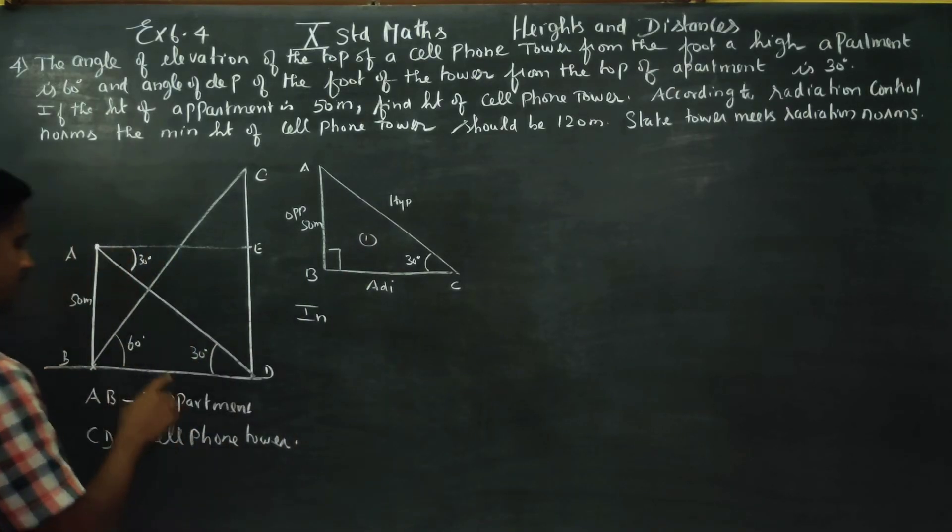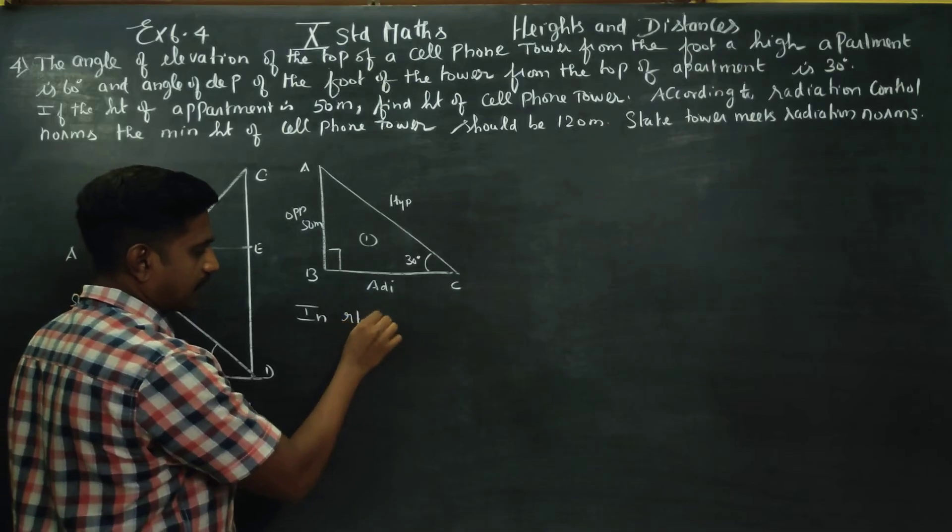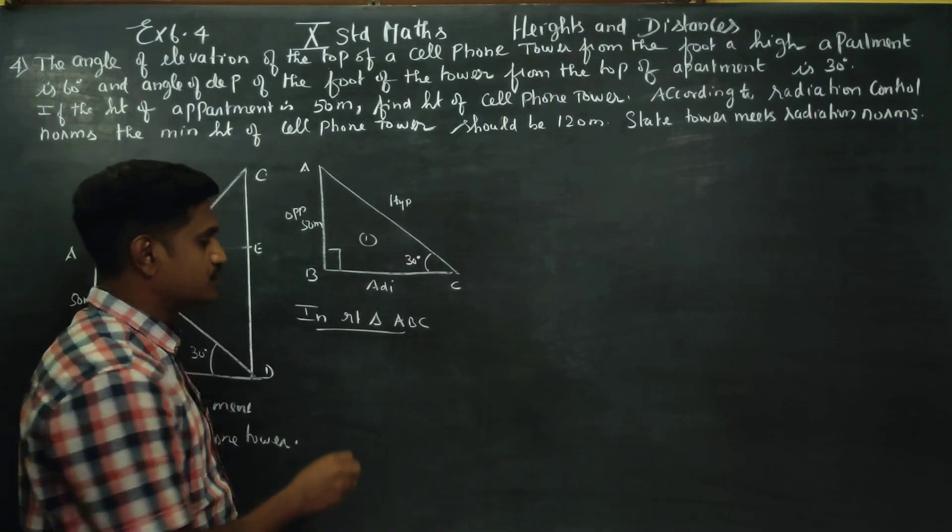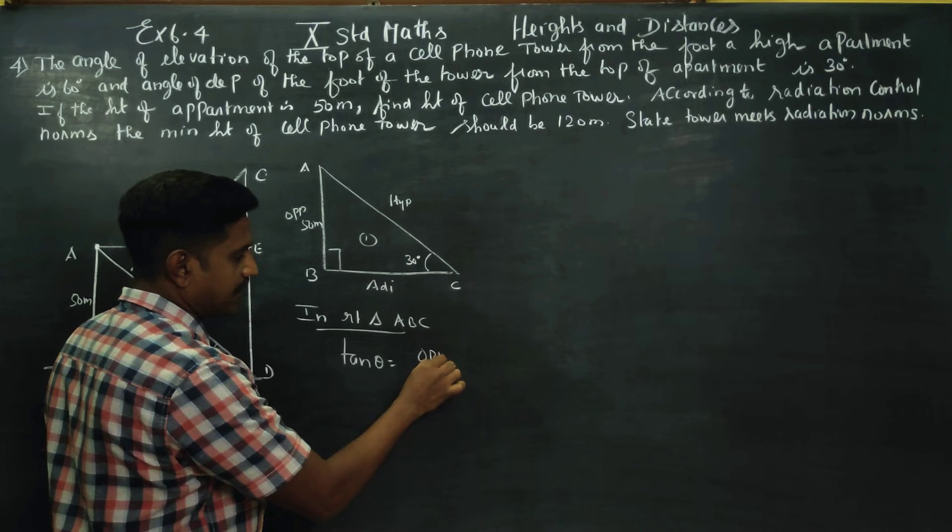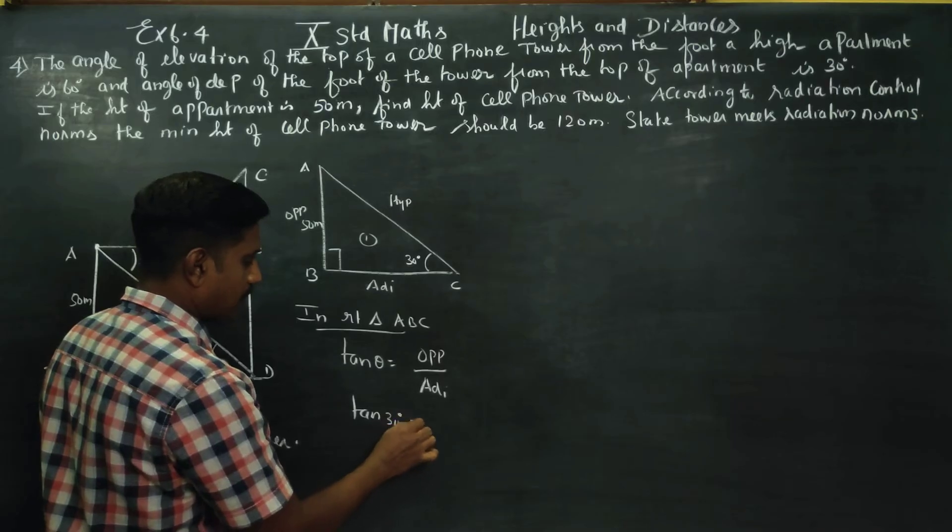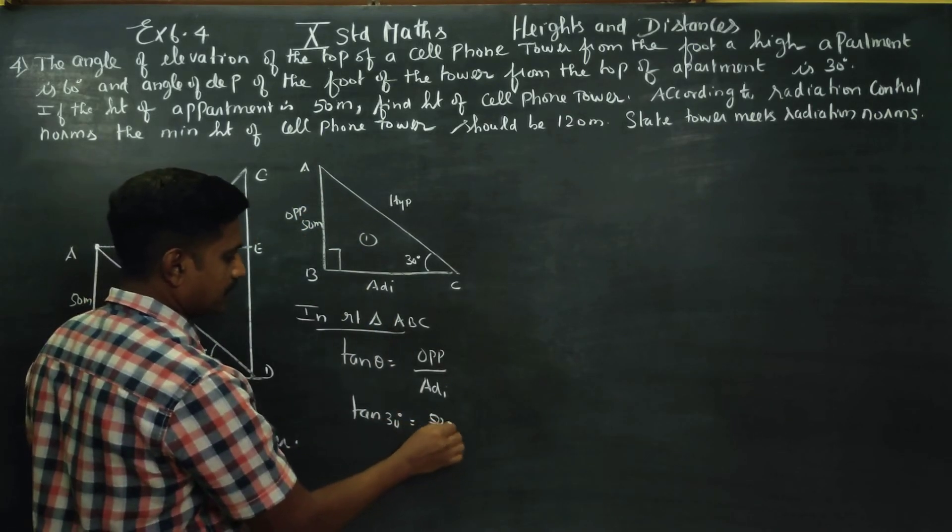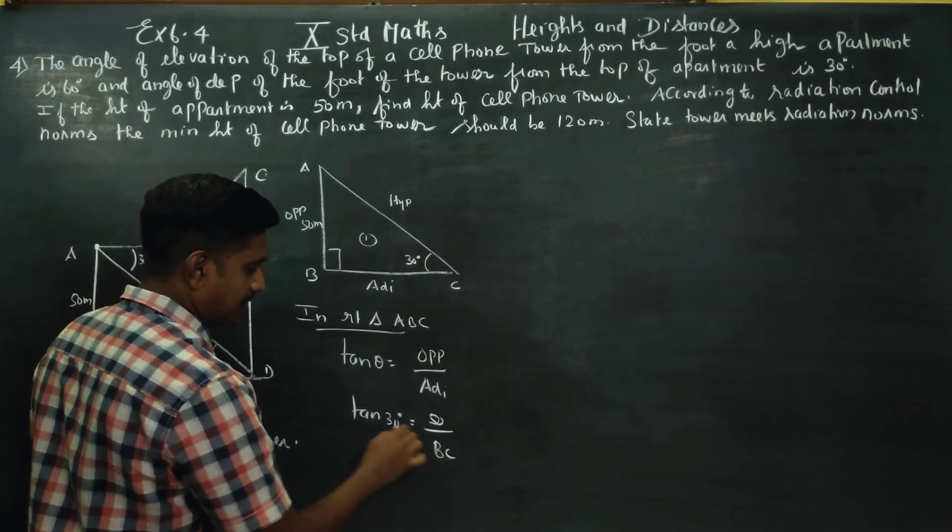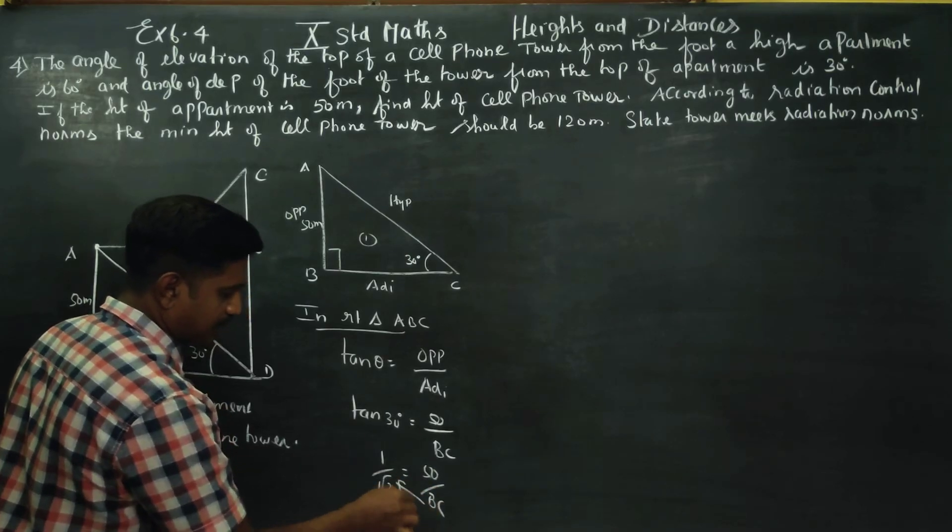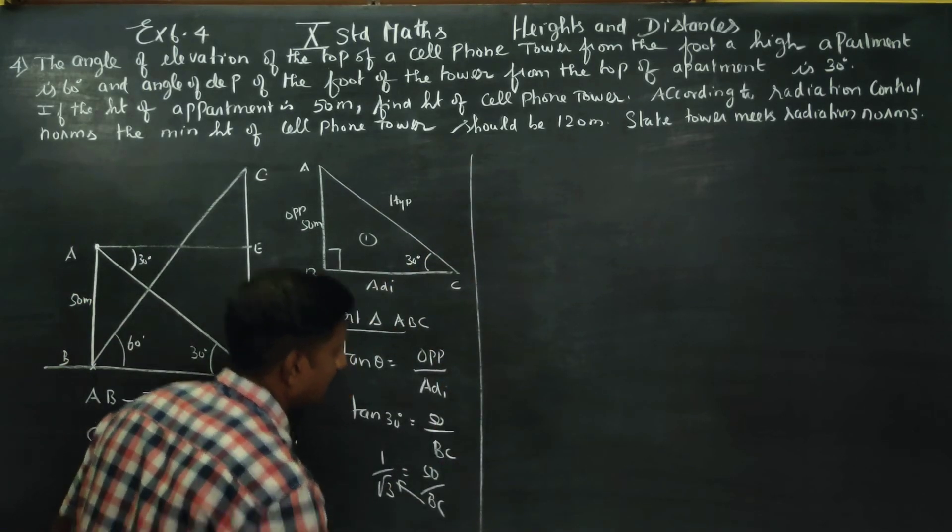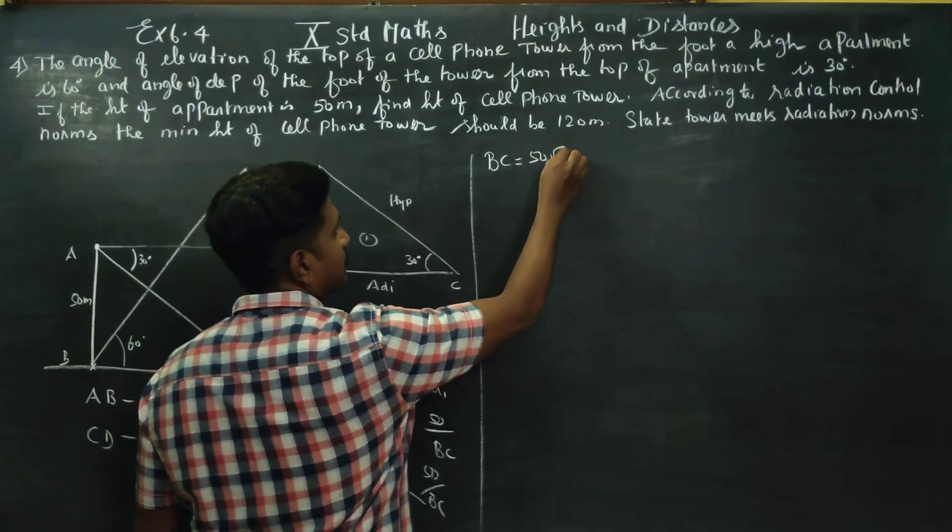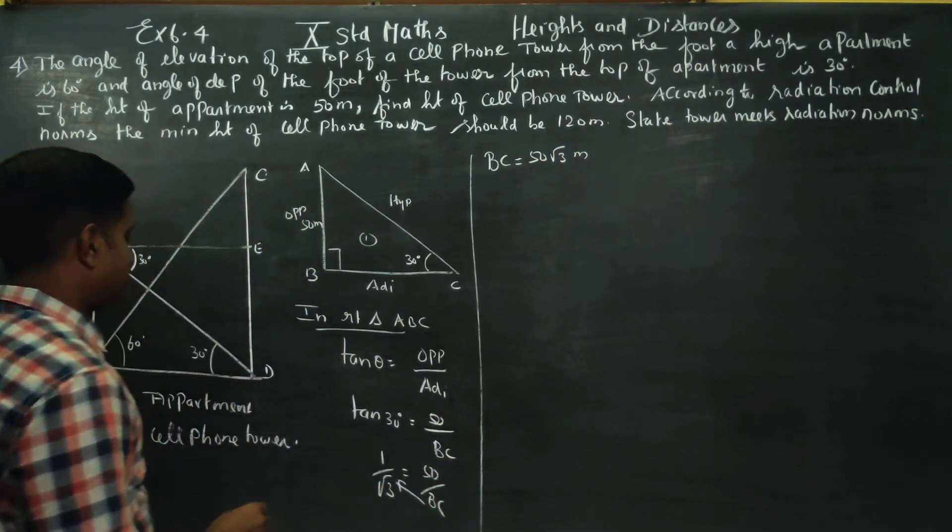In the right triangle ABC, tan theta formula. What is tan theta? Opposite side by adjacent side. Theta is 30 degrees. Opposite side is 50. tan 30 is 1 by root 3 equal to 50 by BC. Cross multiply, BC is 50 root 3 meters.